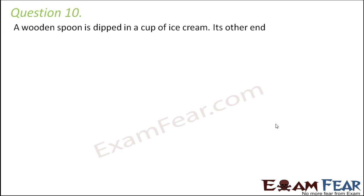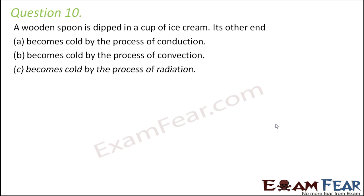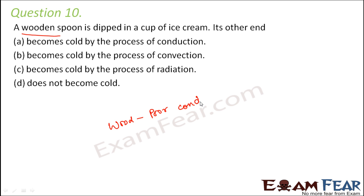Question number 10. A wooden spoon is dipped in a cup of ice cream. Its other end becomes cold by conduction, becomes cold by convection, becomes cold by radiation, or does not become cold. Make a note - it is a wooden spoon, and we know that wood is a poor conductor of heat.